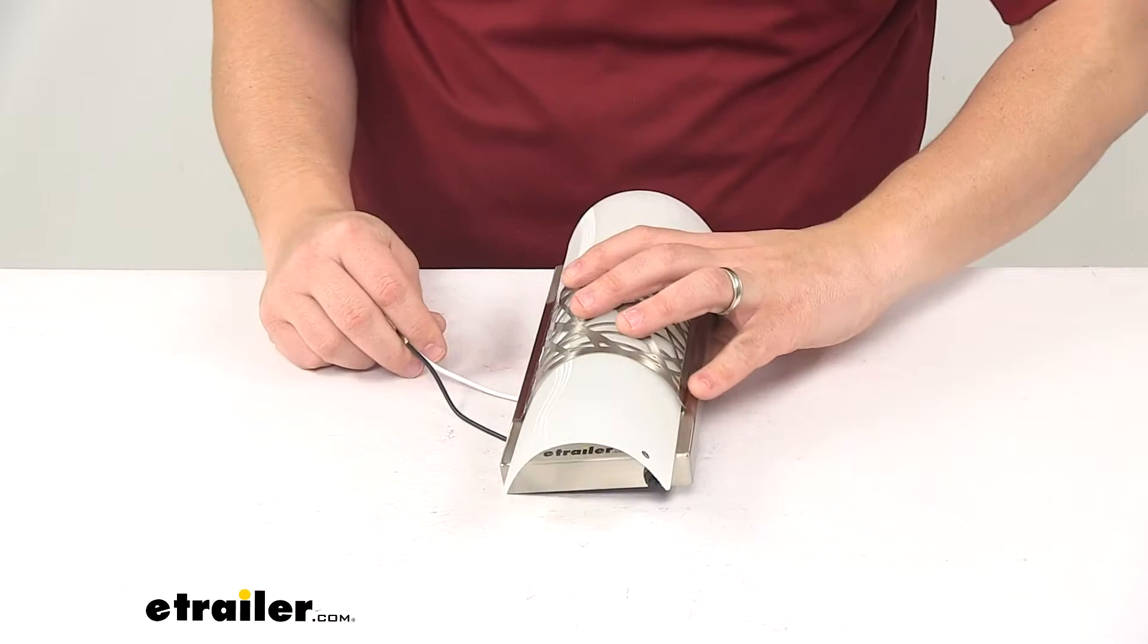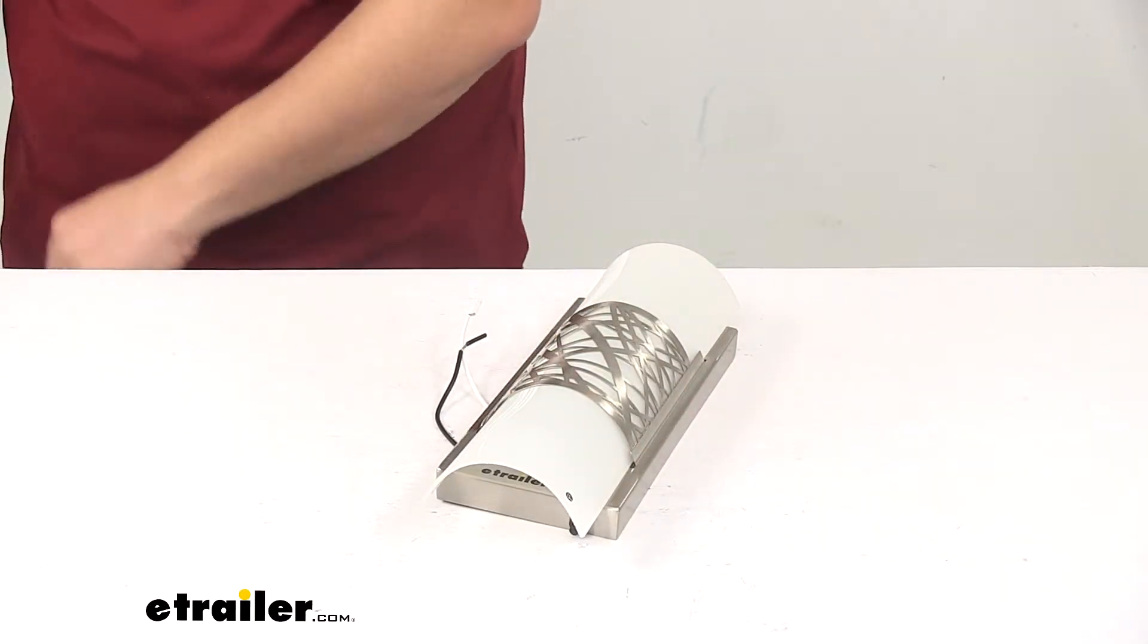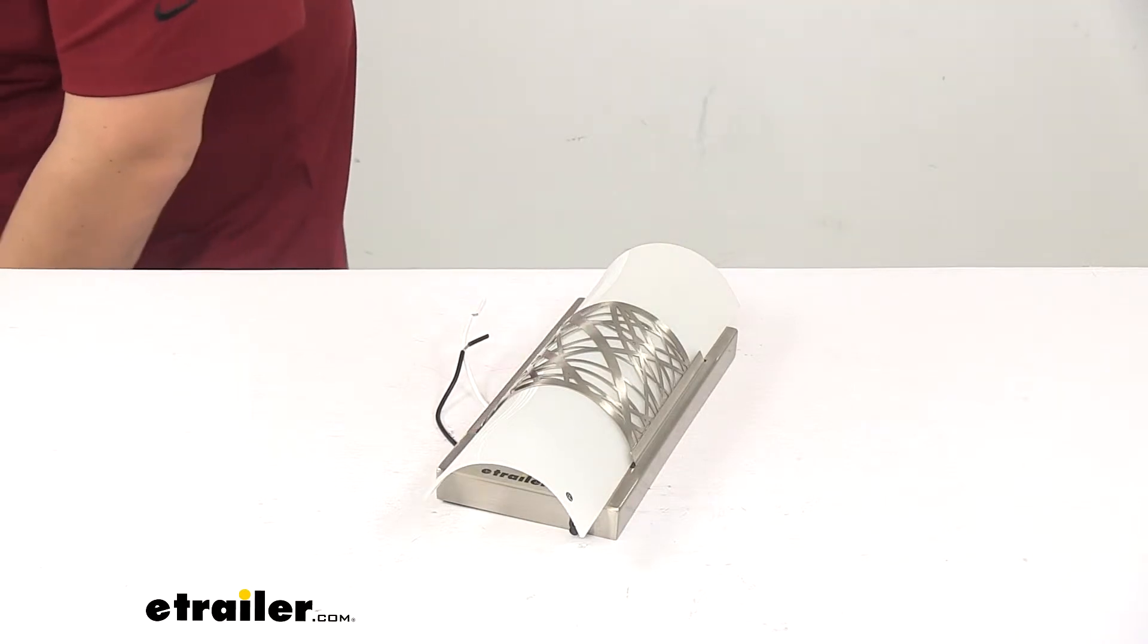We're going to go ahead and hook it up to power, that way you can see what it looks like with some power running to it. And we will also turn off our overhead light so you can see it in a low light setting.